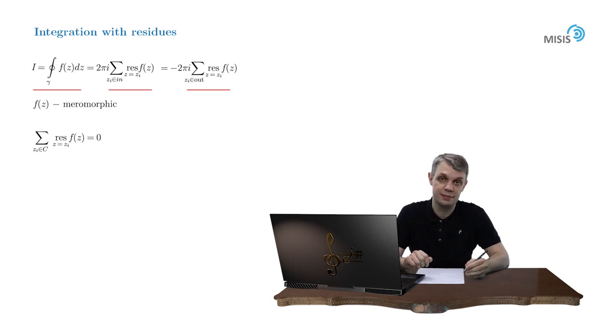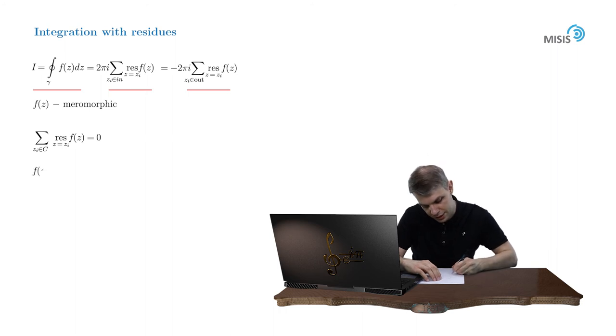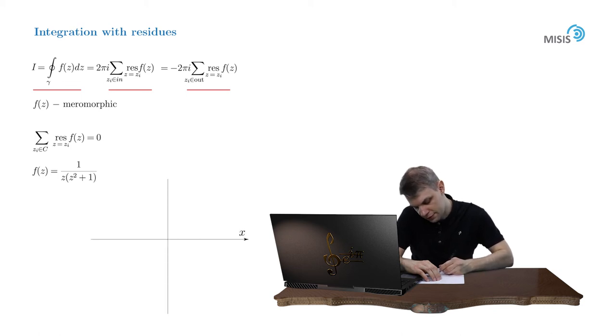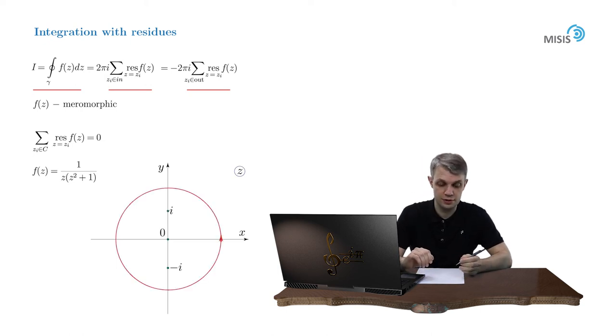As a specific example, let's consider the integral from our previous video. So we integrated function f(z), which was 1 over z times (z² + 1) over contour C_4. Well, in our previous video we had to compute the residues at all the poles inside this contour. But now we can take a different path. We see that all the poles of the integral are positioned inside this contour.